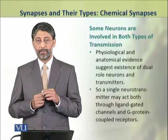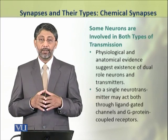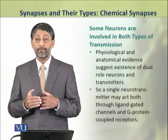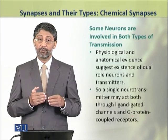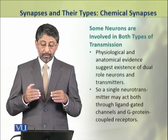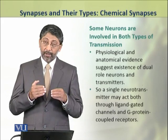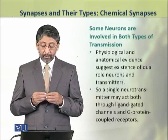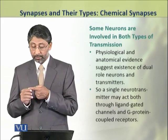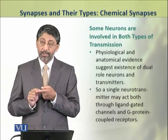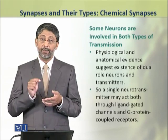There are some neurotransmitters which are involved in both types of transmission — fast as well as slow — so that a single neurotransmitter can act on both ligand-gated ion channels and G protein-coupled receptors.